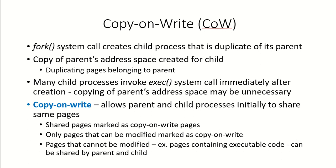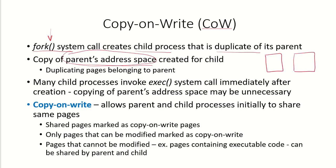The fork system call is used to create a child process. A parent process calls fork, which creates a child process that is a duplicate of the parent. A copy of the parent's address space is created for the child — whatever was the parent's address space, a similar address space is created for the child process.